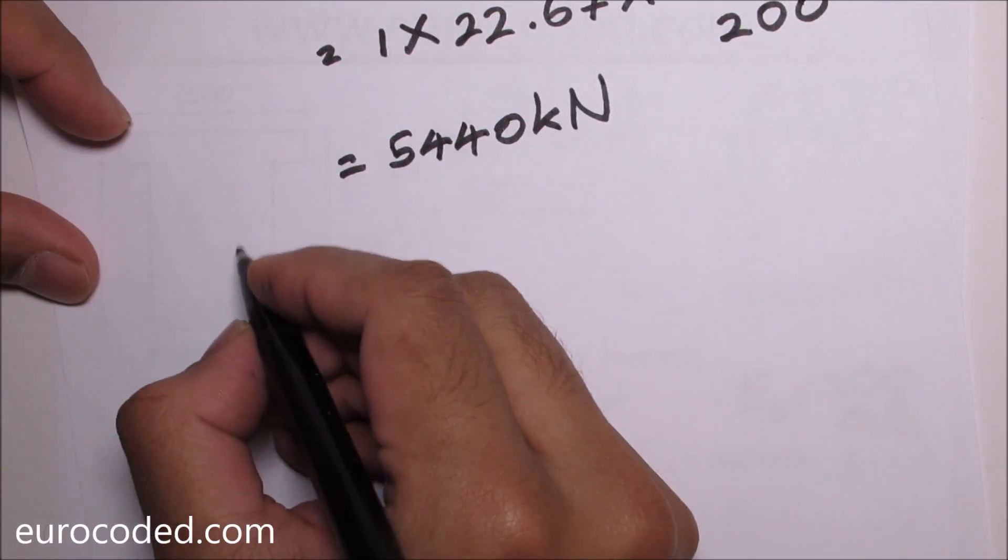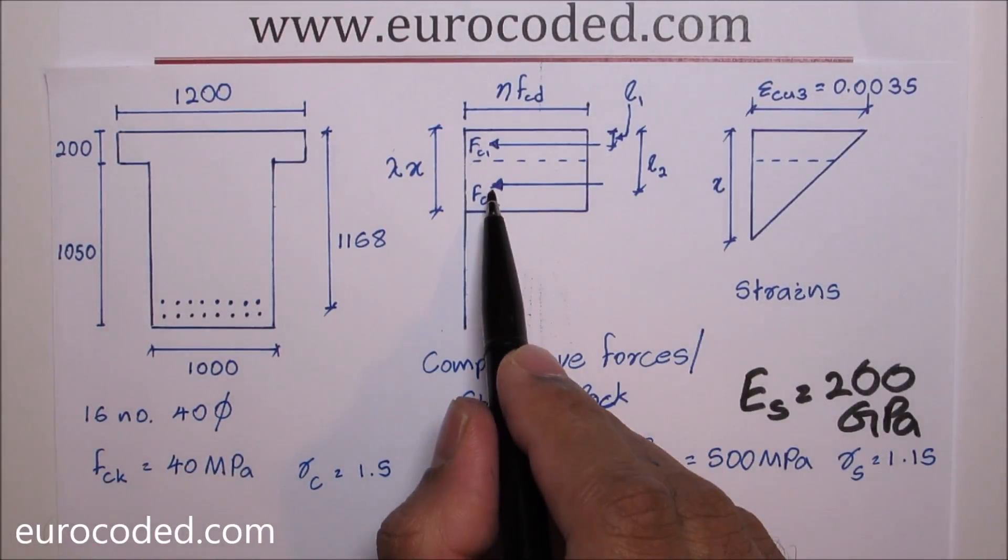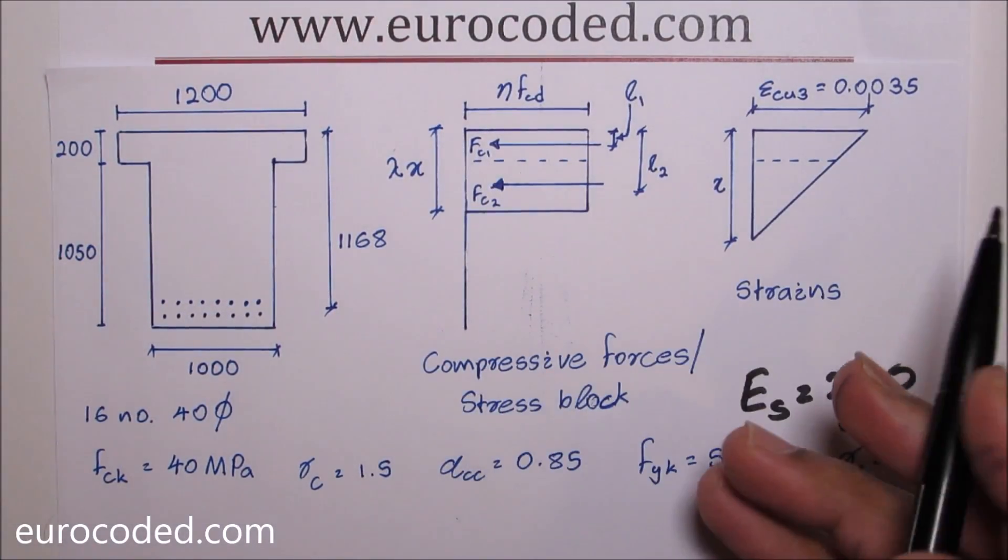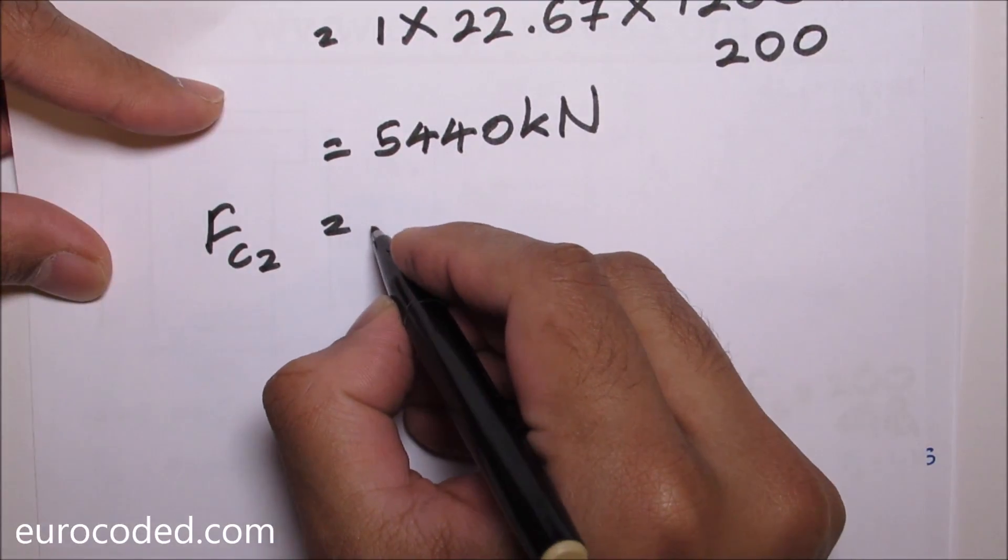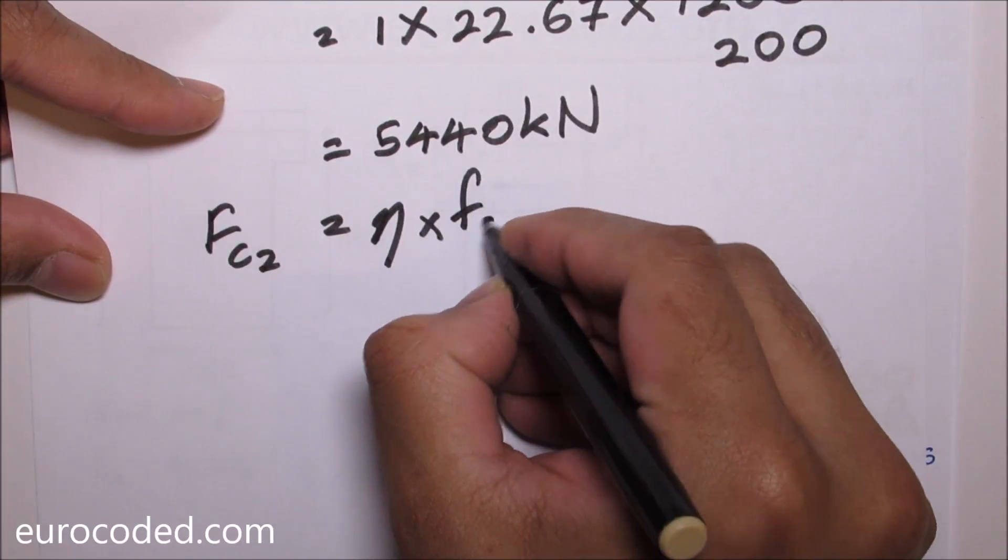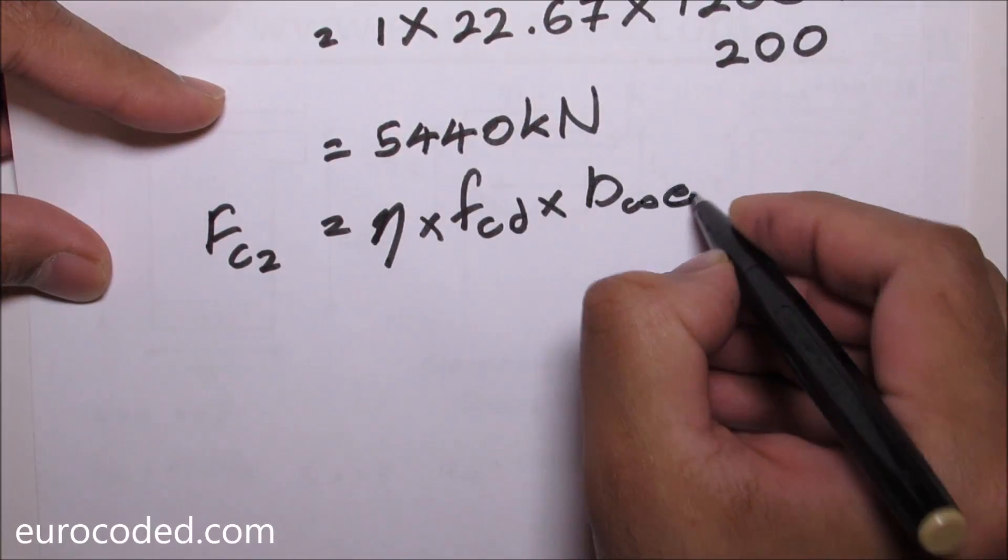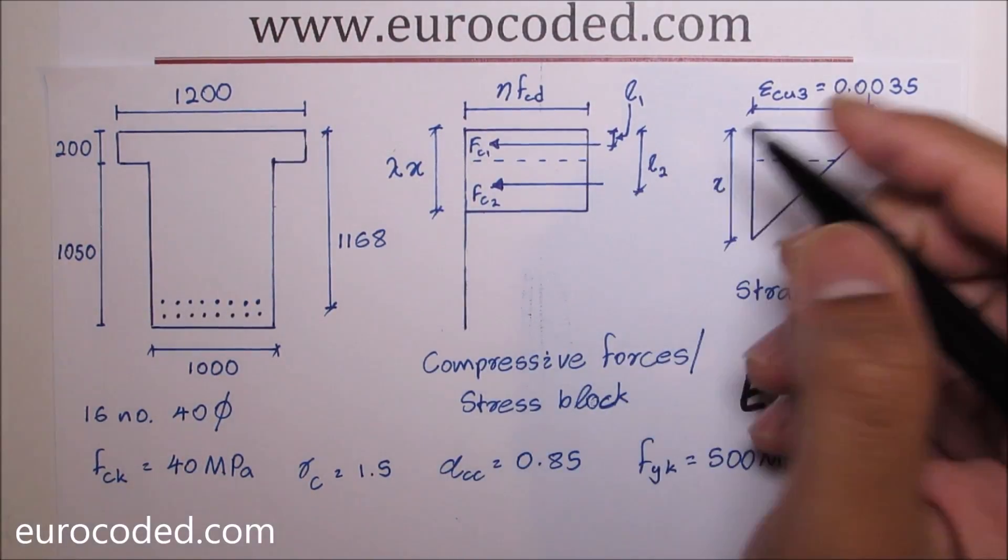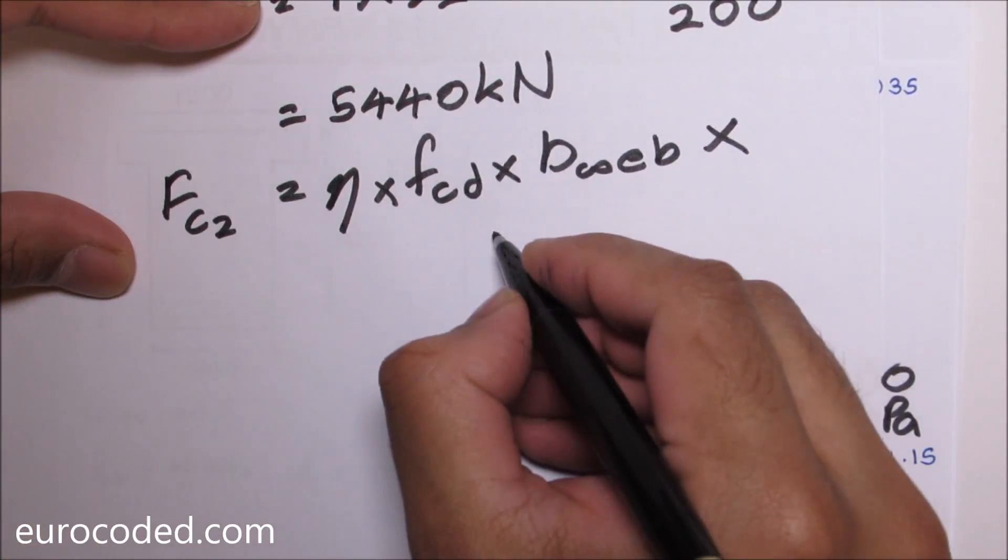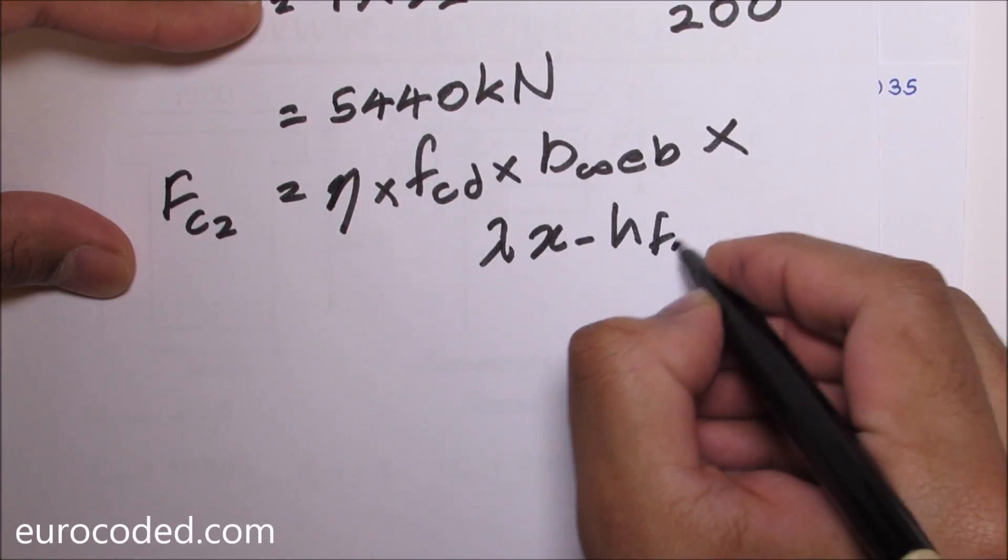Then we are going to calculate FC2, which is this compressive force. FC2 is equal to eta times FCD times width of the web times this distance.